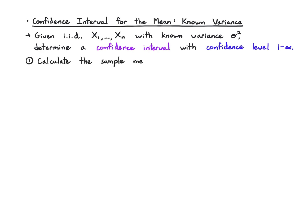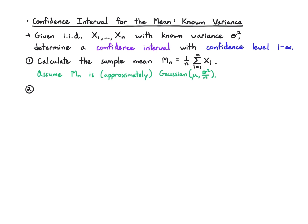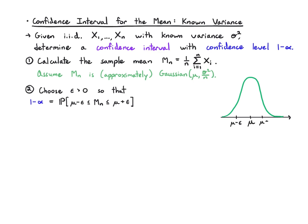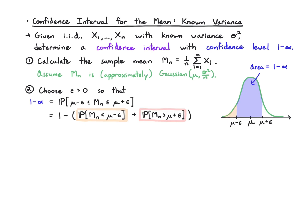We calculate the sample mean as the average of the data, and tacitly assume we can approximate it with a Gaussian with center mu and variance sigma squared over n, because that's the variance of the sample mean. Our job is to choose epsilon so that 1 minus alpha equals the probability that mn falls in this interval. Using the complement property, we write it as 1 minus the probability of landing on the left or right of the interval, and by symmetry set each tail to alpha over 2, so the area in the middle will be 1 minus alpha.